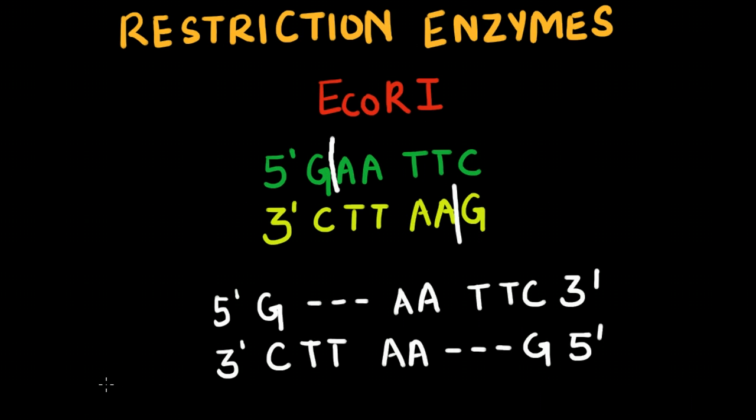Thus, EcoRI specifically recognizes the GAATTC nucleotide sequence on a DNA and cuts the DNA into two fragments with sticky ends. In contrast to blunt ends, sticky ends generally have a stretch of unpaired nucleotide bases.